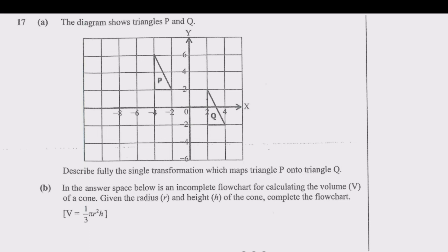Let us look at question 17. Question 17(a): The diagram shows triangles P and Q. Describe fully the single transformation which maps triangle P onto Q. We are looking for the single transformation which maps triangle P onto Q. Q is the image, so we have the object and the image.